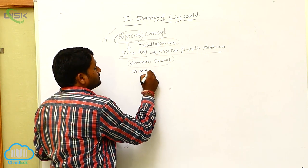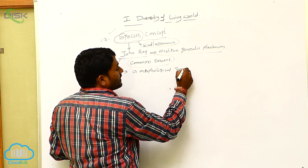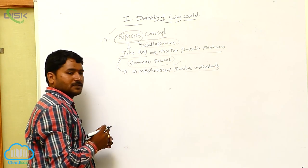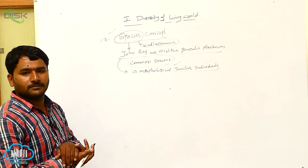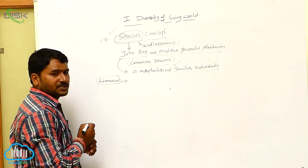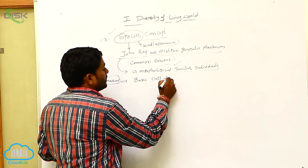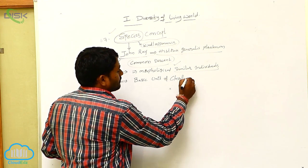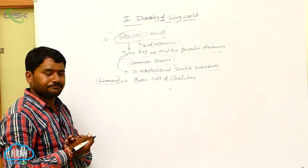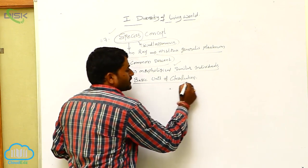Which are morphologically similar? So here, eyes per genre scientist — morphologically similar individuals are called as species. Linnaeus defined the species as a basic unit of classification. In his book Systema Naturae, he used the word species and defined it as a basic unit of classification.